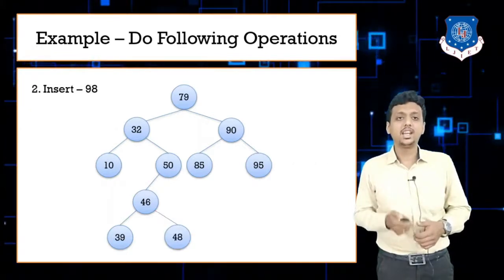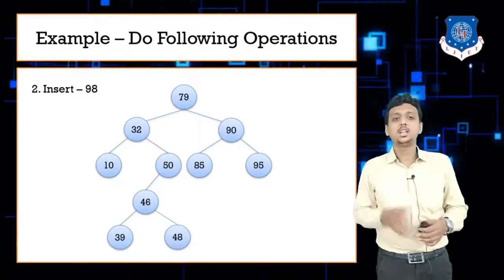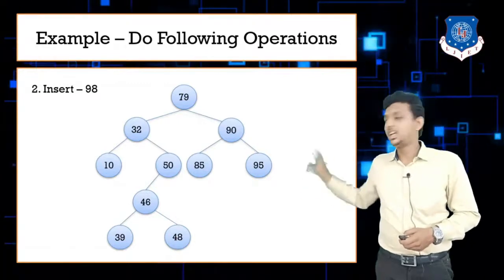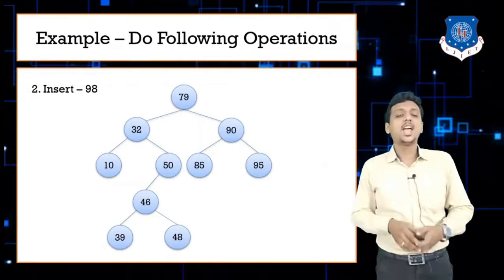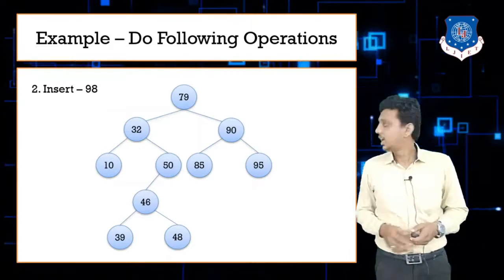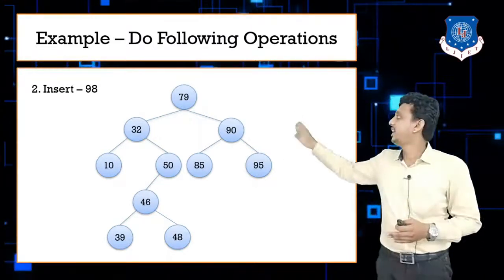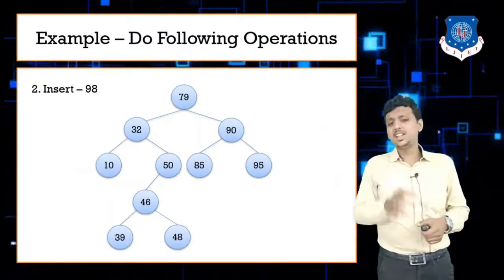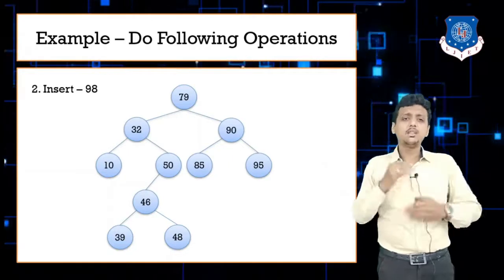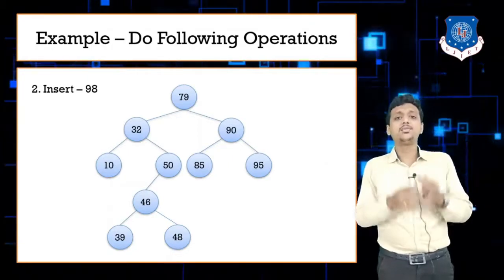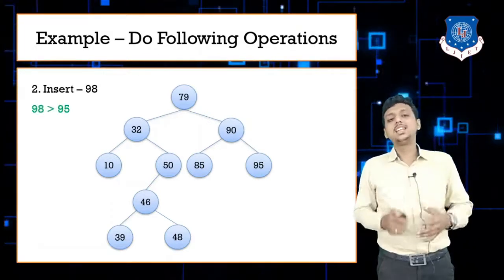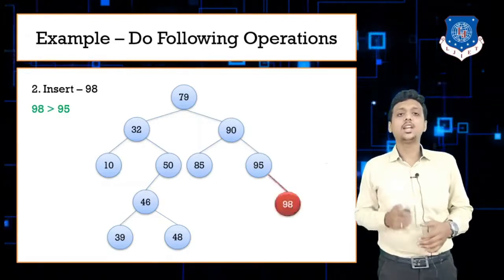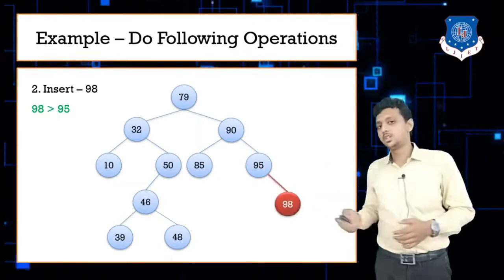Next, insert 98. Start comparison from 79. 98 is greater than 79, so move right. 98 is greater than 90, so move right again. 98 is greater than 95, so insert 98 on the right side of 95. It is inserted successfully.